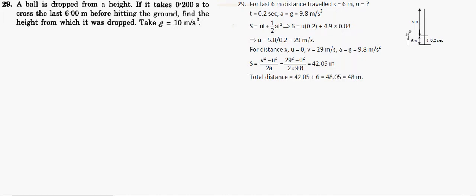At that point we don't know the velocity, but the time taken is 0.2 seconds as per the question - 0.2 seconds to cross the last 6 meters. We know the equation: s = ut + ½at². Here a is 10, so ½a = 5.